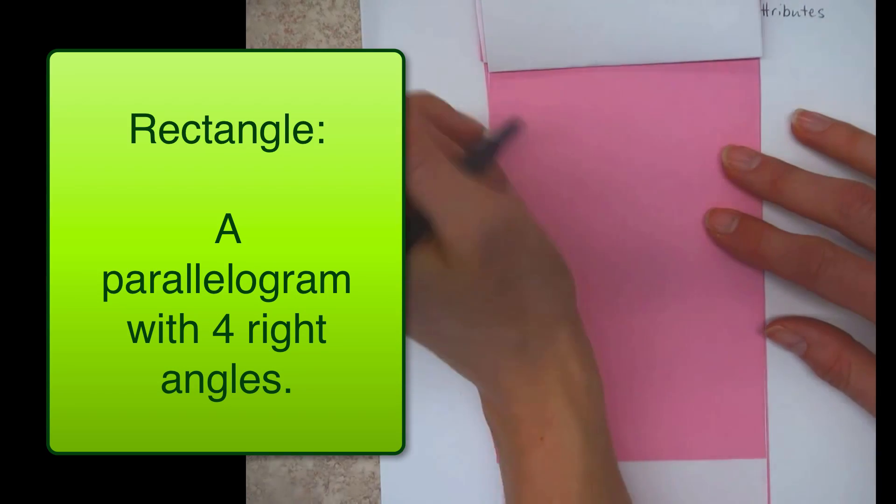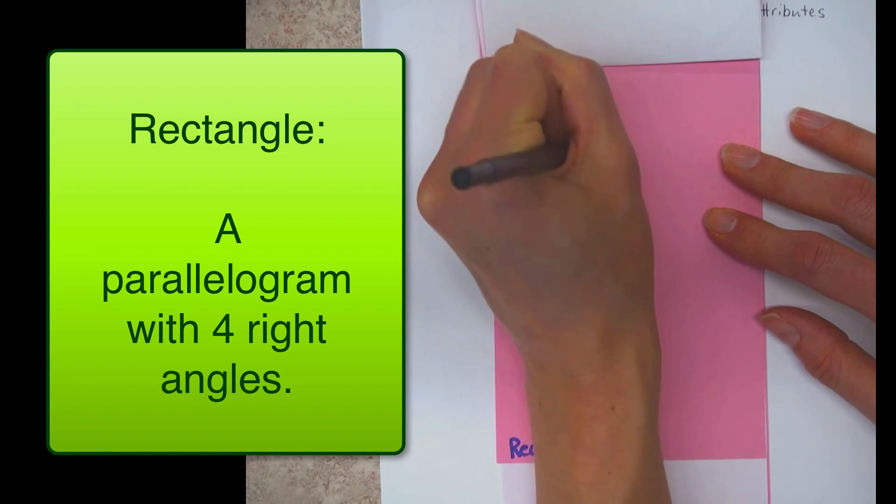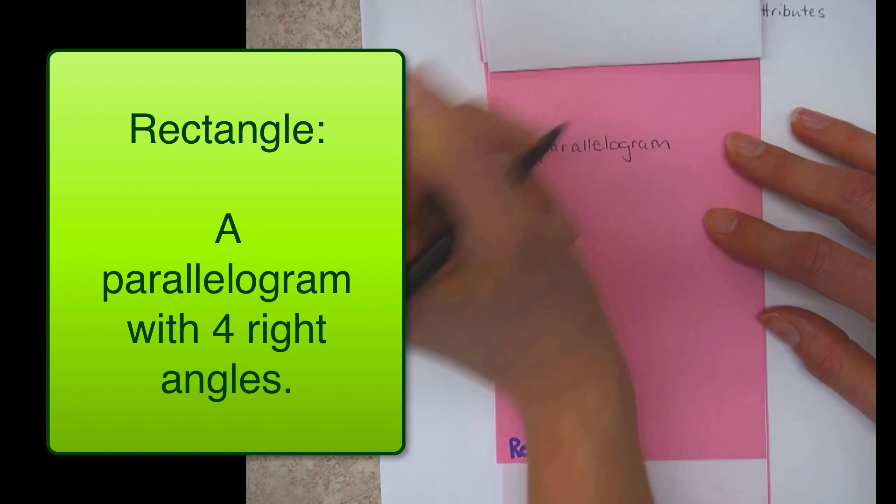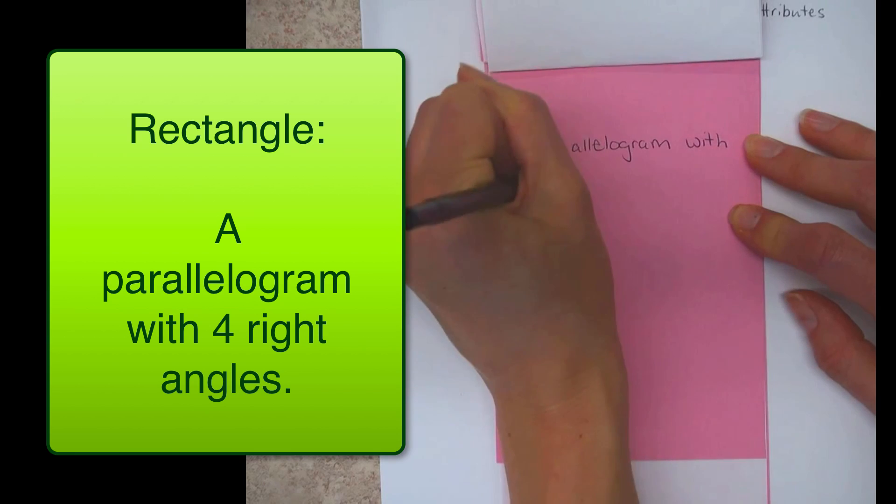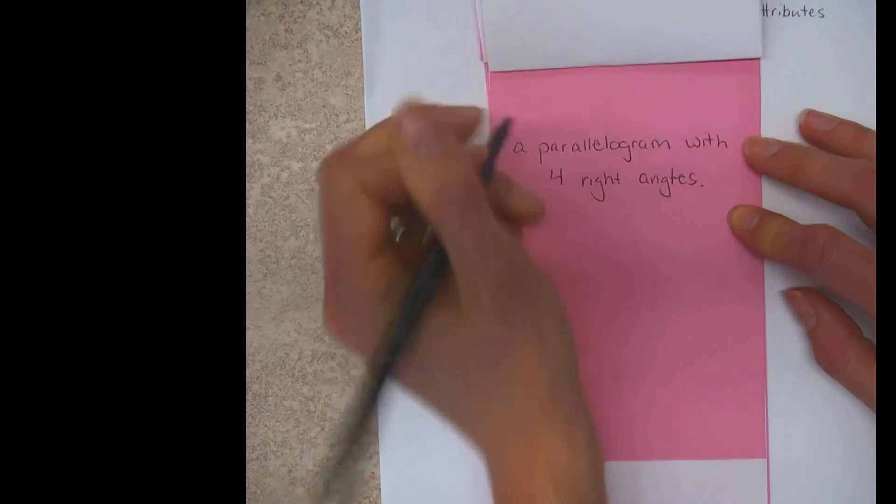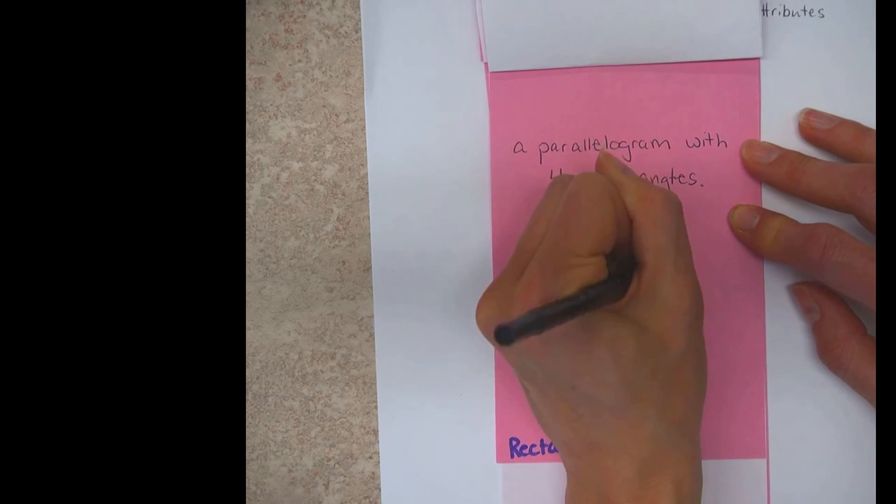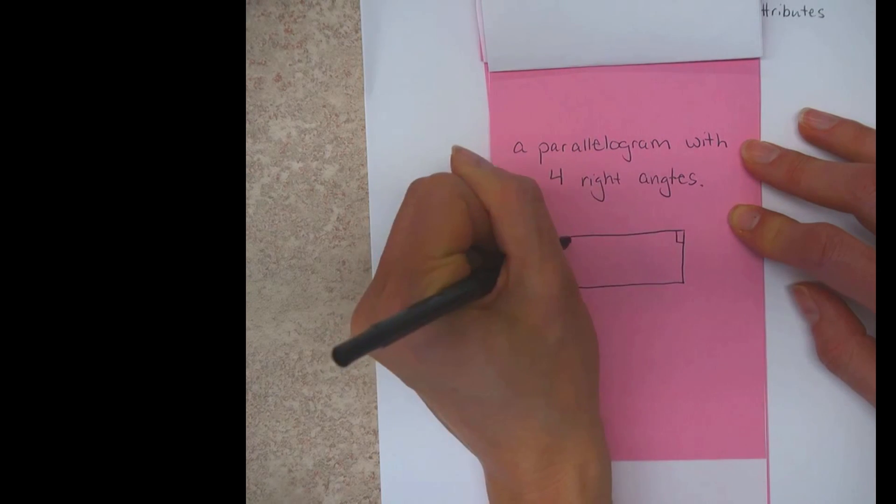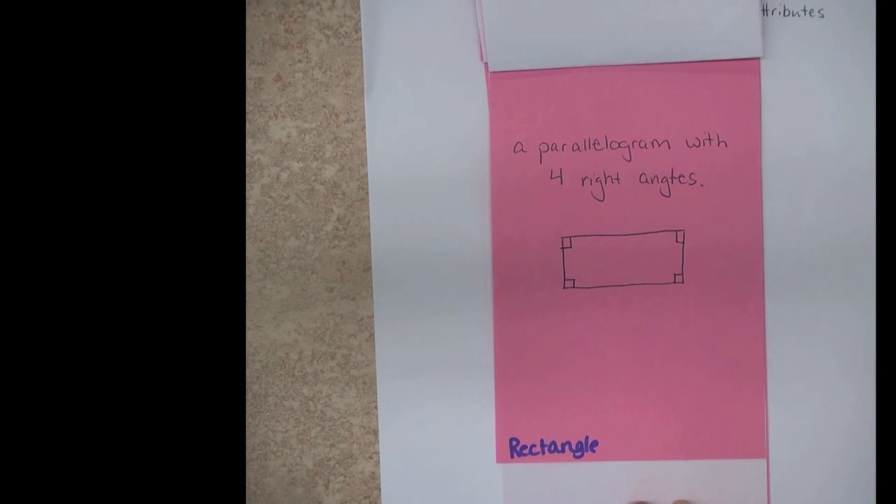That would be fun. A rectangle is a parallelogram with four right angles. So you know what a parallelogram already is. It has two sets of parallel sides. This one has two sets of parallel sides that have four right angles.